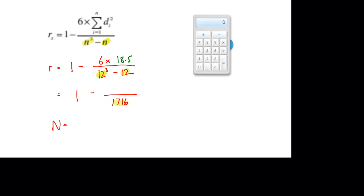So we've got to work out 6 times 18.5 is equal to 111. So we've got 1 minus 111 over 17.16 and that works out to 0.935. That's a high value close to 1.